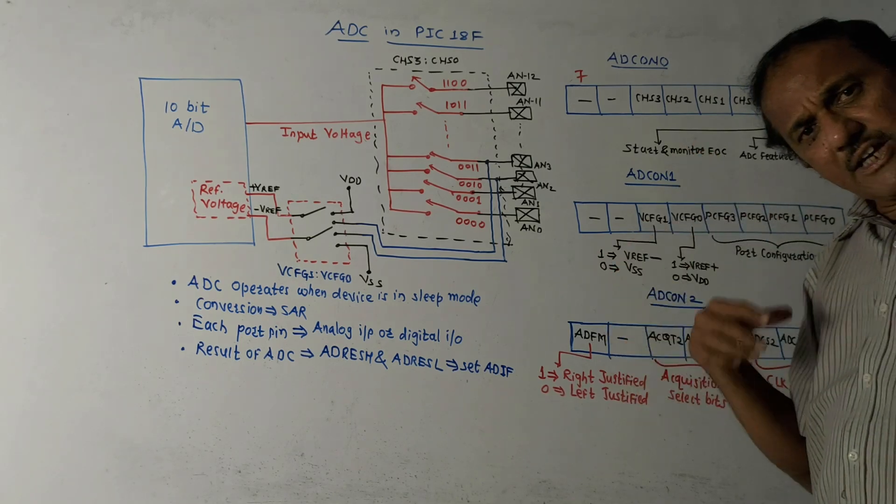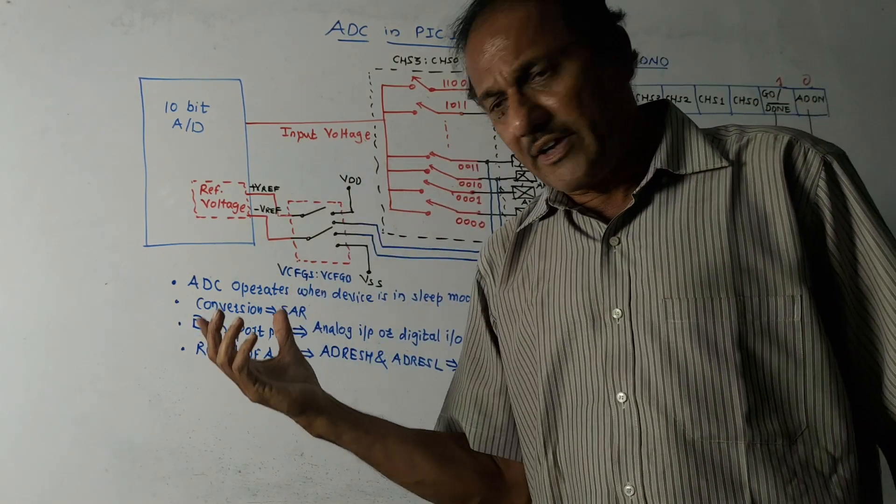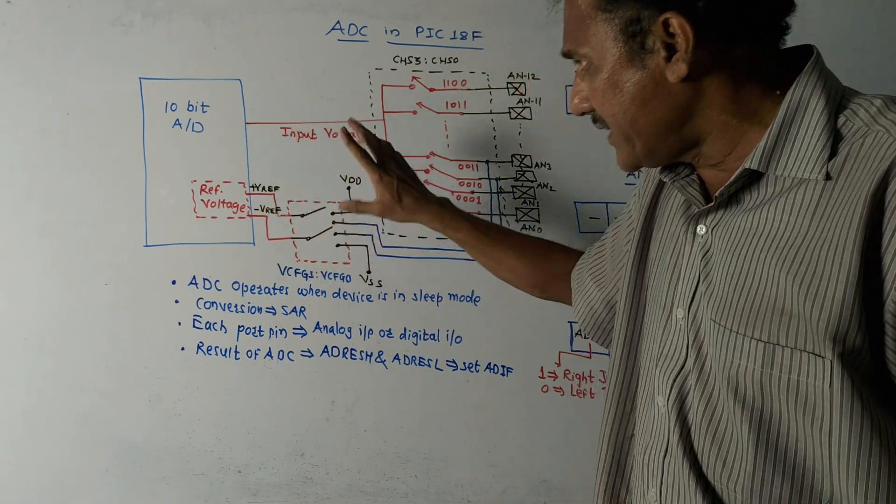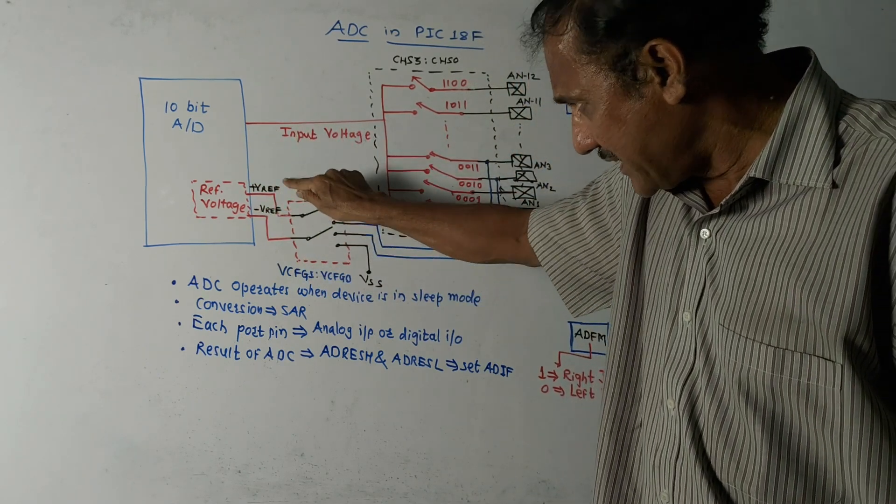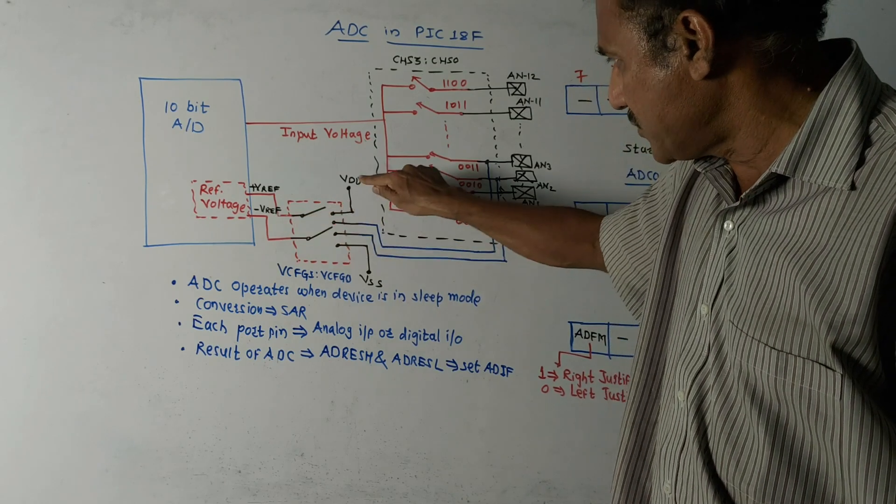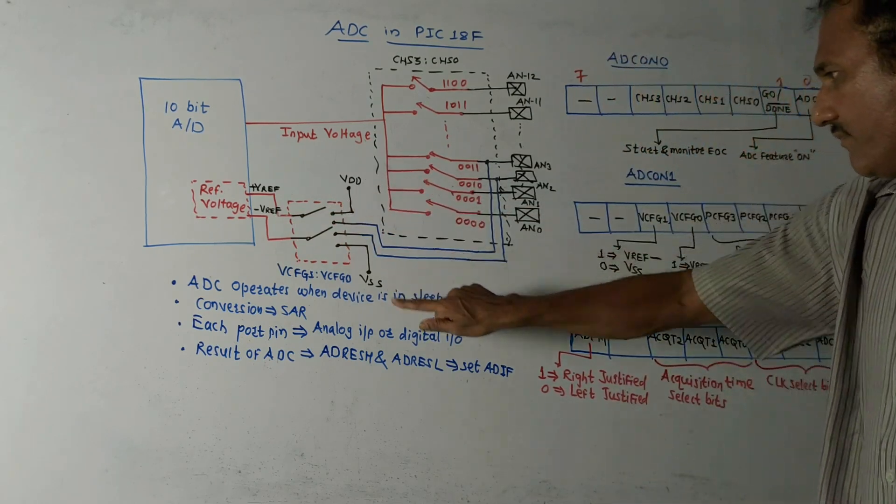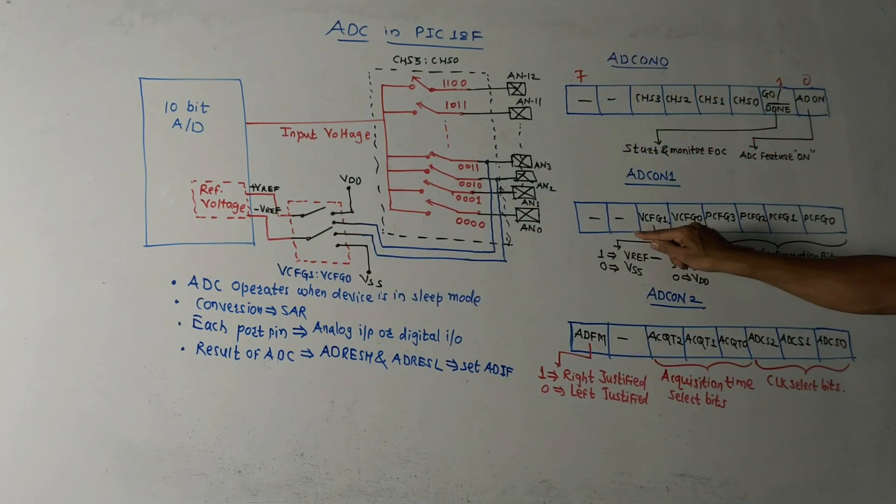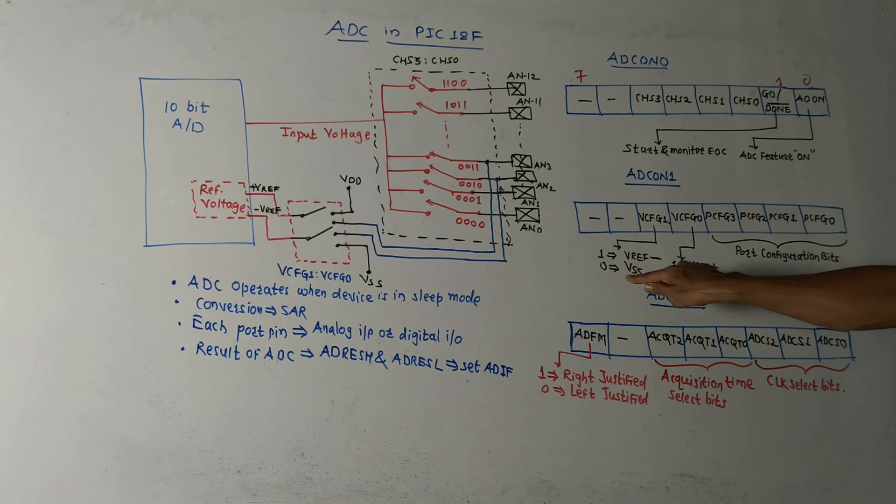This control register is basically used to select a particular reference voltage. You may have explained what are the voltages available: plus V reference, minus V reference, plus VDD, and VSS. So these two bits are unused. VCFG1, if this bit is one, reference voltage will be negative reference voltage. And if it is 0, VSS will be selected.